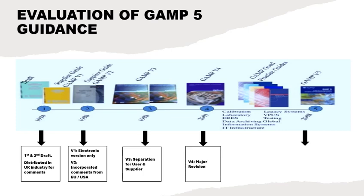In 2001, GAMP5 version 4 was published and there was a major revision. ISPE published many good practices guides in this revision, for example: a good practices guide on calibration management, a good practices guide on validation of process control systems, validation of legacy systems, electronic records and electronic signatures, validation of laboratory computation systems, and electronic data archival and their procedures.